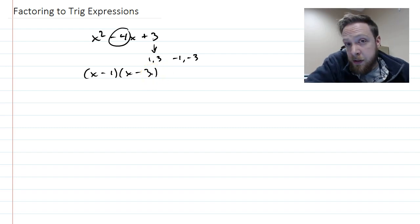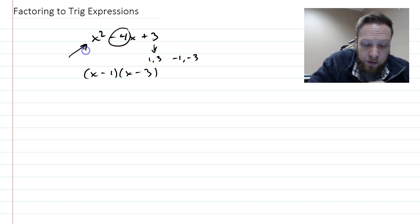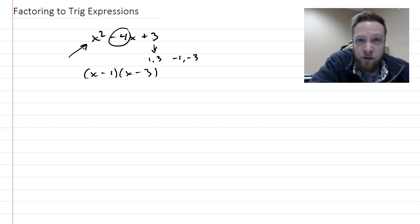And this got a little more difficult because then people started throwing things in front of the x squared. And what you had to do then is you had to kind of trial and error. At least that's how we did it.